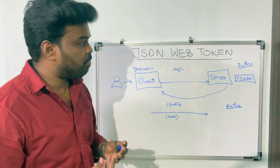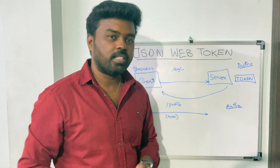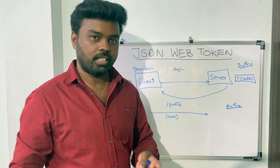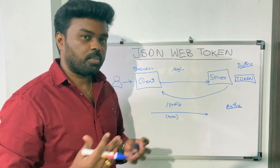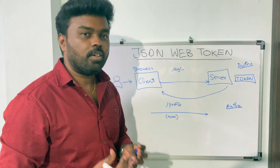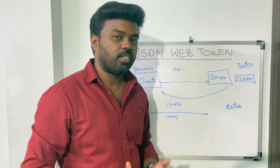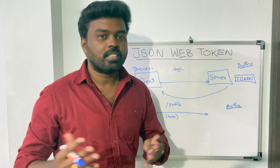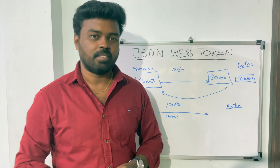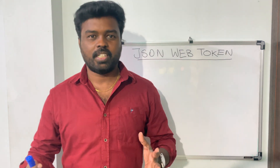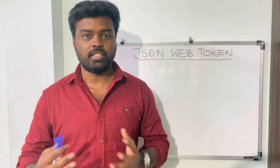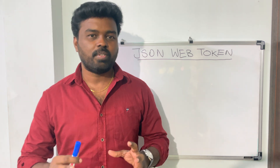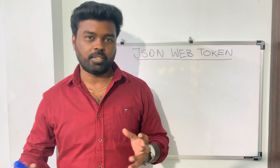Now we keep saying that this token contains information about the user data, privileges, and so on. We need to understand what the format of the token is and how we embed all this information into it. The format of the JWT is usually JSON — that's why we call it JSON Web Token. This JSON Web Token usually has three sections: the first section is the header.